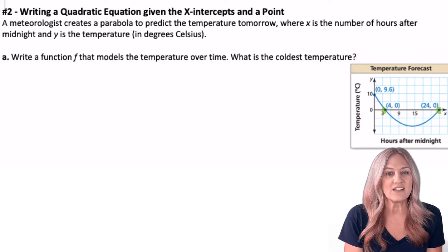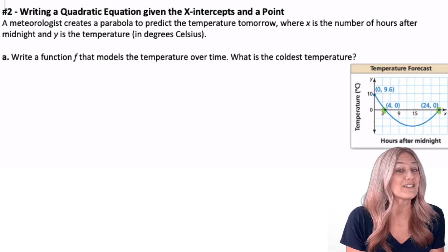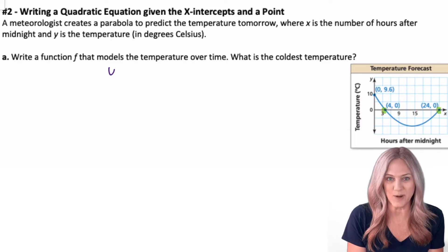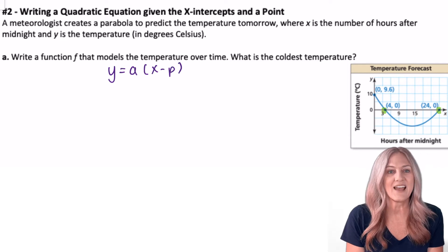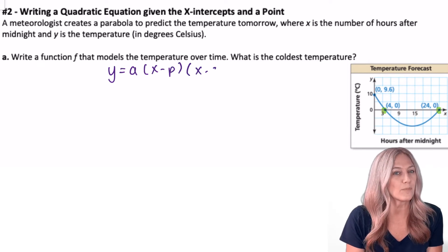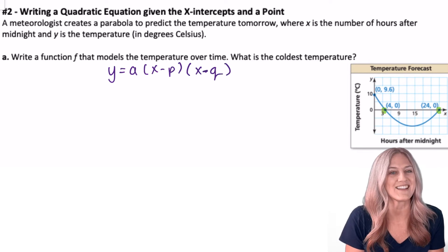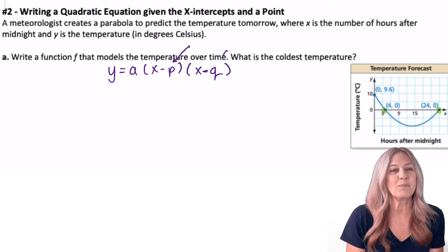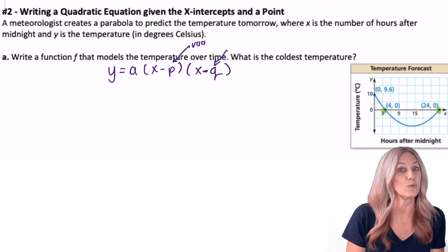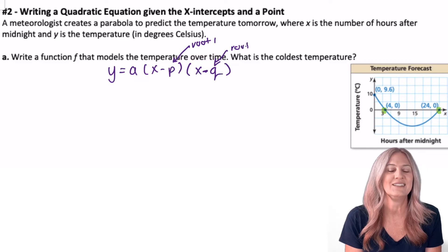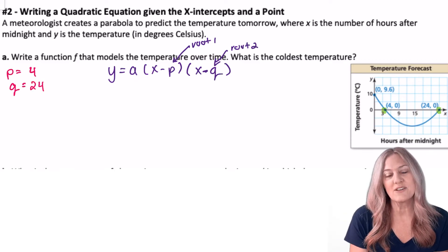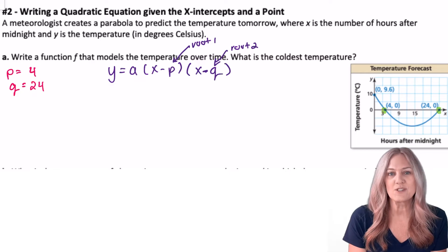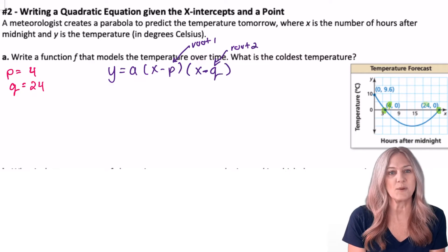Knowing that I have the intercepts, let's use the intercept form of the quadratic equation. Y equals a(x - p)(x - q). Remember, p and q represent our root 1 and root 2. Let's substitute in the x coordinates of the x-intercepts for our p and q. So let p equal 4 and q equal 24.